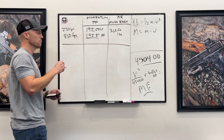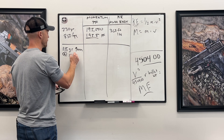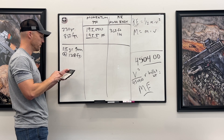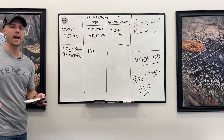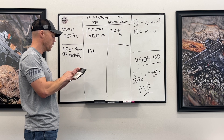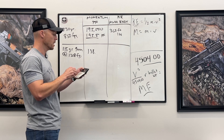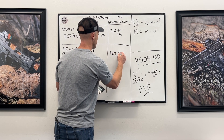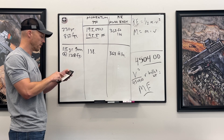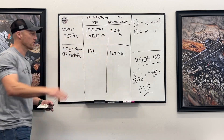Now let's do a 115 grain 9mm at 1200 feet per second. Power factor: 115 times 1200 equals 138 — that does make minor for USPSA competition. Muzzle energy: 1200 times 1200, divided by 450,400, times 115 — also 368 foot-pounds. So these are basically identical in terms of muzzle energy, but the 9mm has a much weaker power factor compared to the .45.